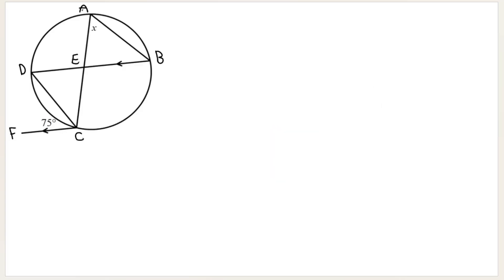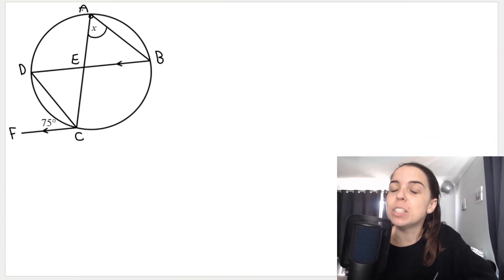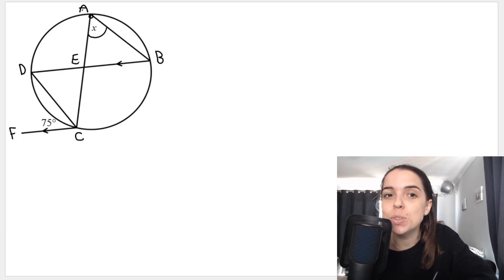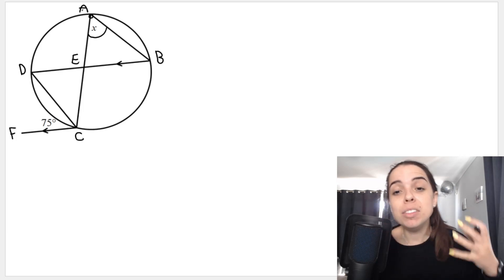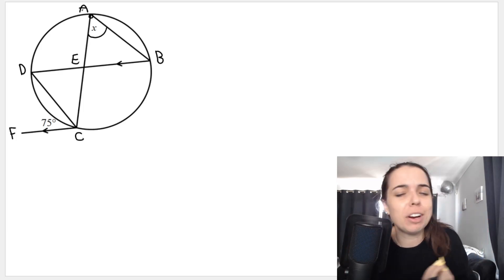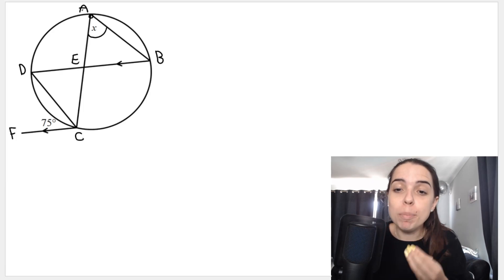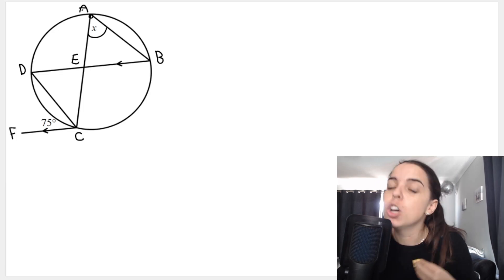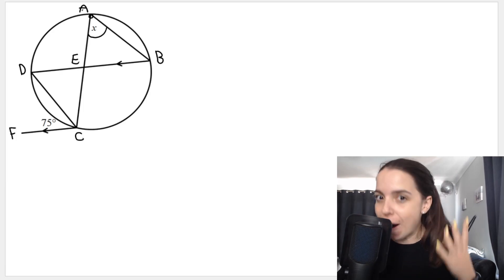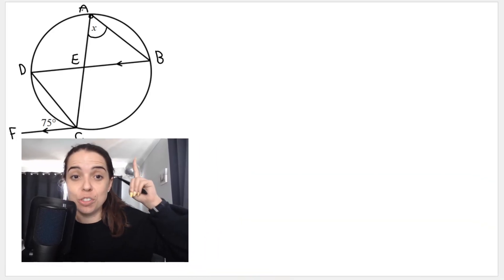Let's try. I've just completely randomly labeled the different points in this diagram and we're looking for x. Now it's not obvious when you just quickly look at it that you need to use the angles in the same segment, but I'll show you why. Always look to see if there are parallel lines — which there are.